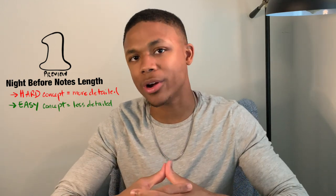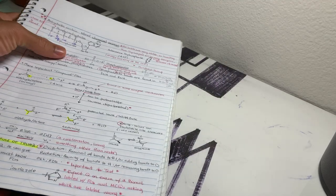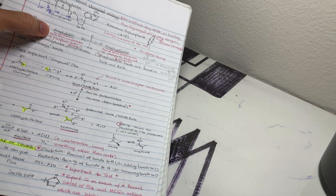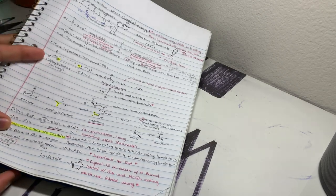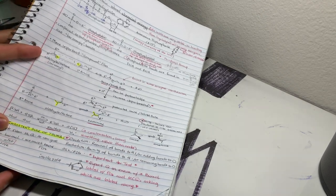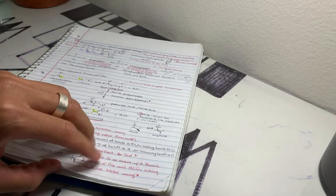I would not write extensively, but if the class was something complex like biochem, I would. I'm going to show you guys what that looks like for me. Here are what my notes look like for biochem. Anything that is in red was added during class, or anything that's highlighted was added during class, but all that black — that's preview work, that's night before work.